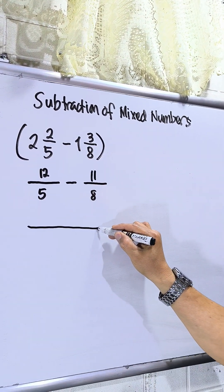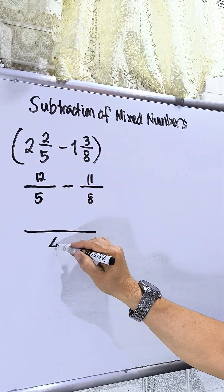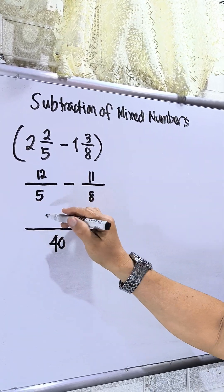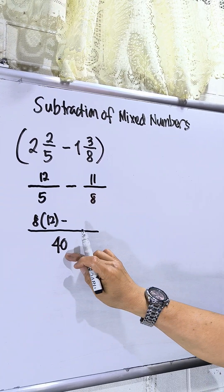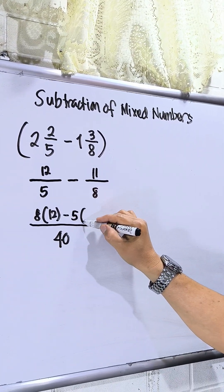Then, find the LCD between 5 and 8. Just multiply it. That will be 40. 40 divided by 5, that is 8. Times 12 minus 40 divided by 8, that is 5, times 11.